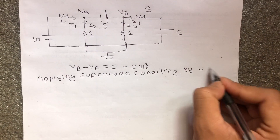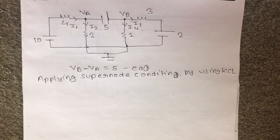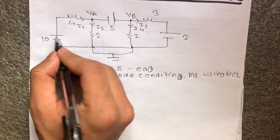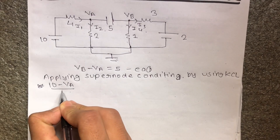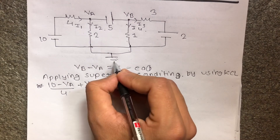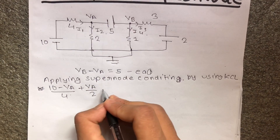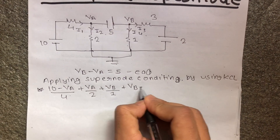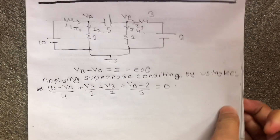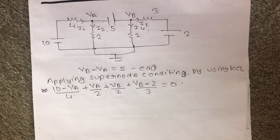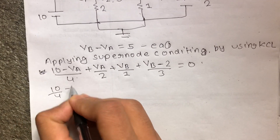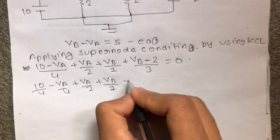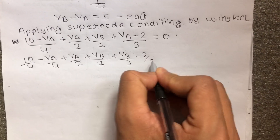By using KCL and applying the super node condition: (10 minus VA) upon 4, plus VA by 2, plus VB upon 1, plus VB minus 2 upon 3, equals 0. Referring to the previous video on node analysis, this gives us: 10 by 4, minus VA by 4, plus VA by 2, plus VB by 1, plus VB by 3, minus 2 by 3, equals 0.